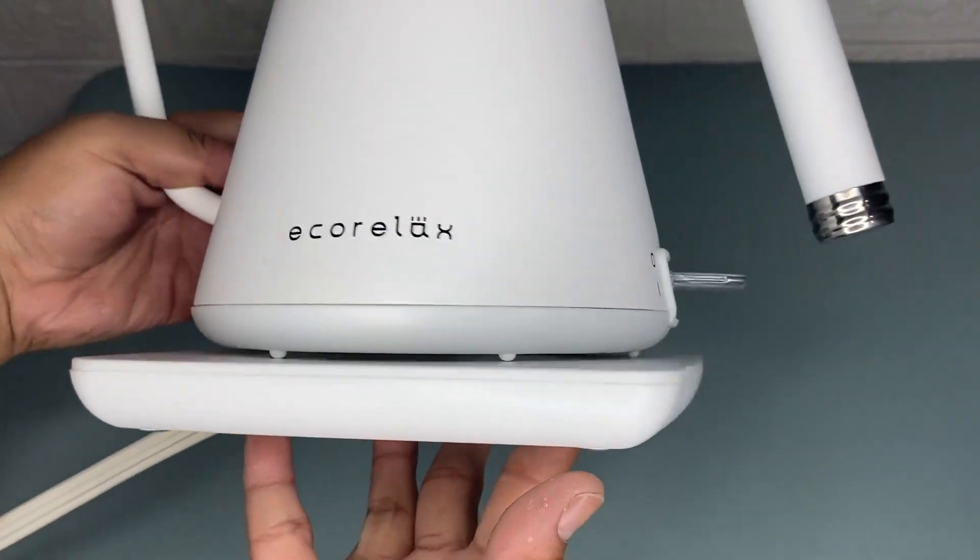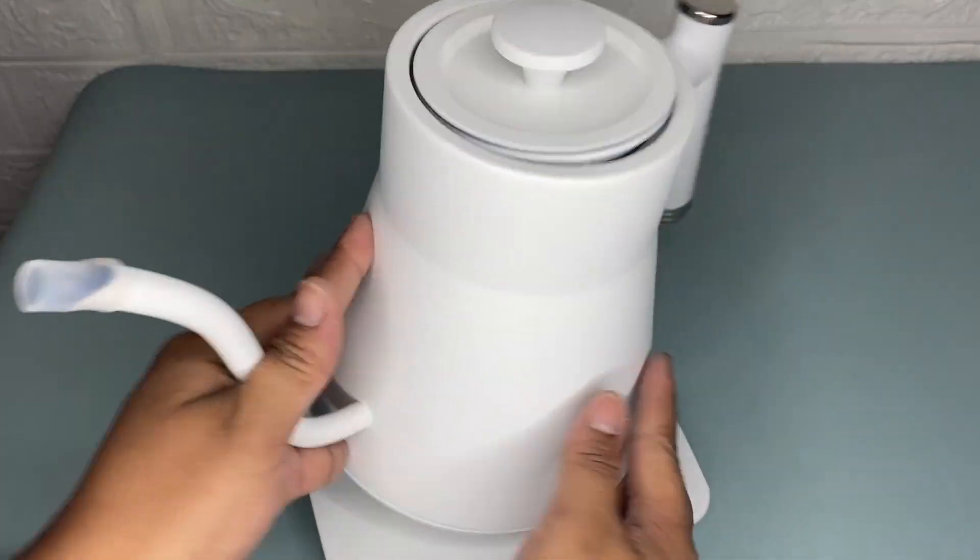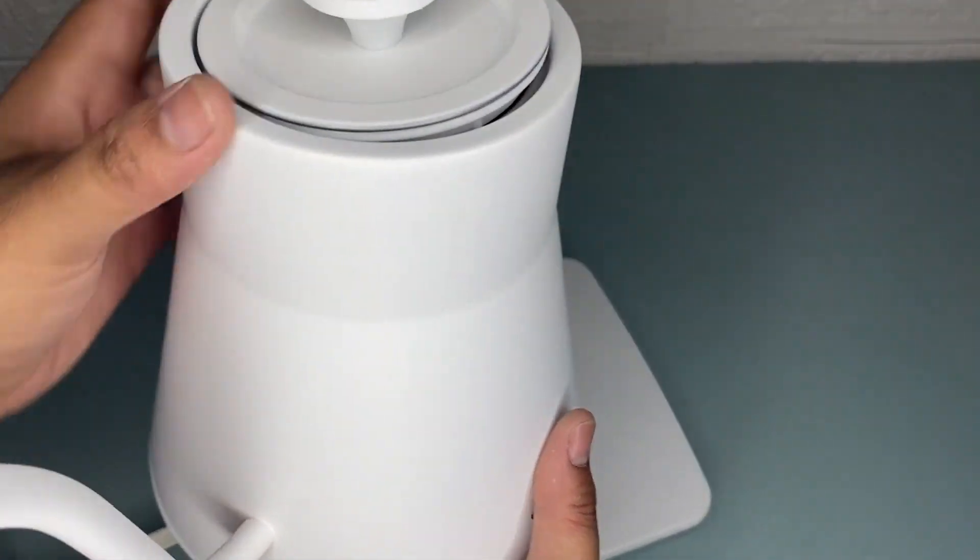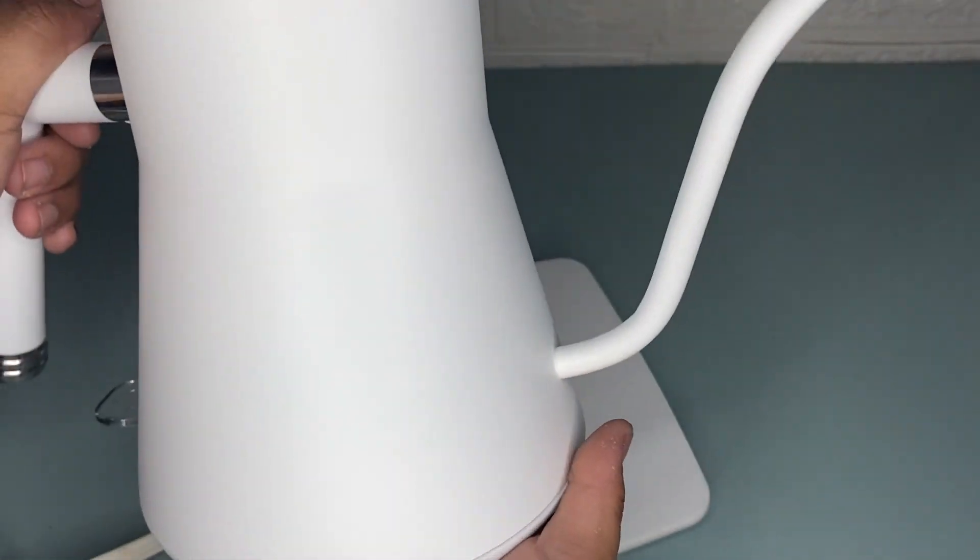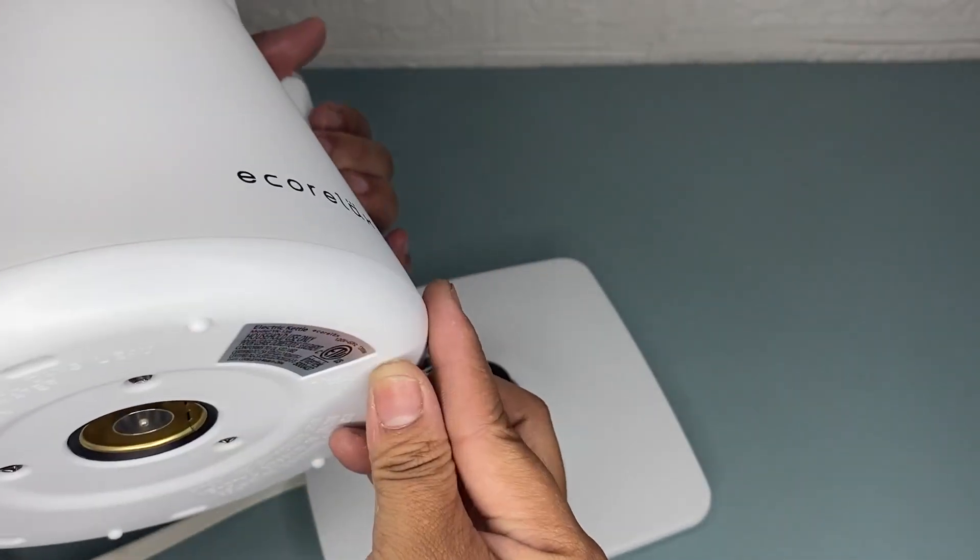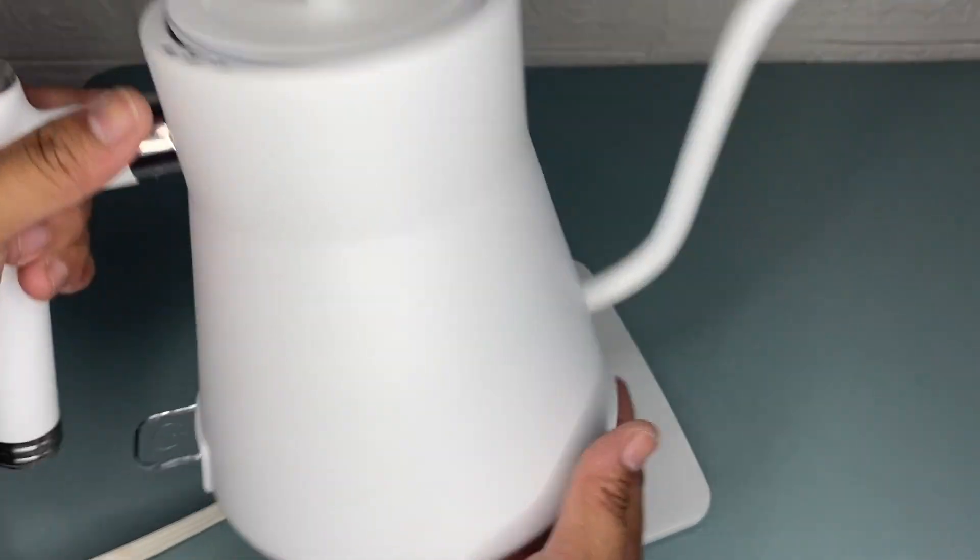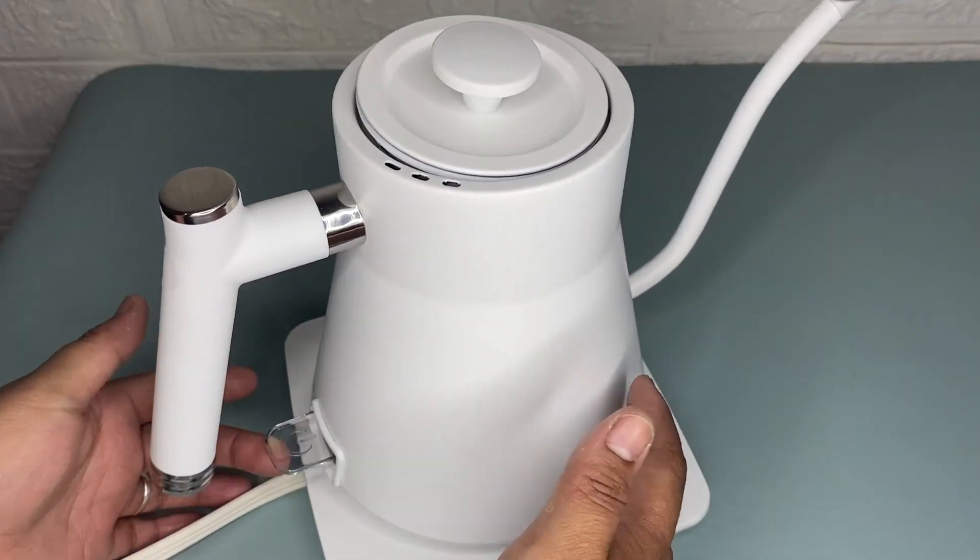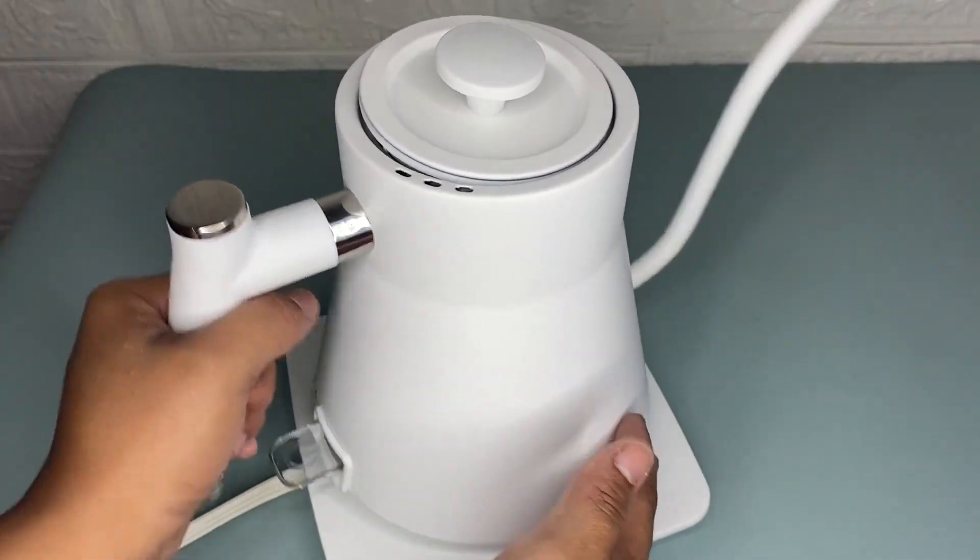After using this Echorelax Gooseneck Electric Kettle for a while now, I would rate this a five-star rating. As you can see, it has a 1,200 watts output power, so this electric kettle can boil a full pot in three minutes. If I were you, you should definitely try this because this is worth buying.